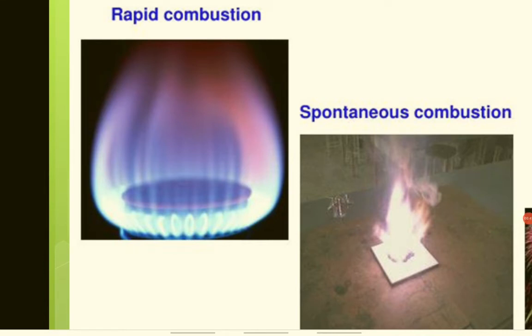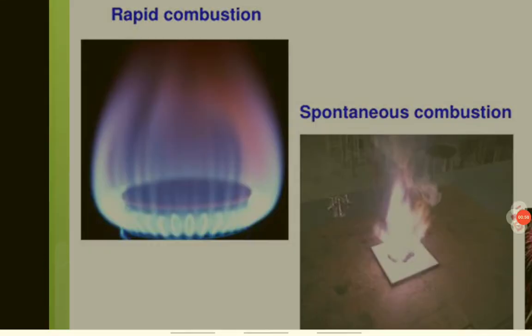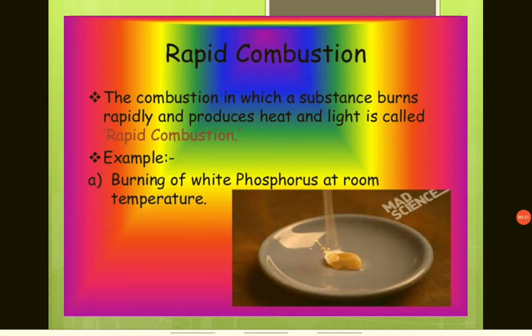Rapid combustion: the type of combustion in which a substance burns rapidly and produces heat and light is known as rapid combustion. For example, burning of white phosphorus at room temperature is an example of rapid combustion.